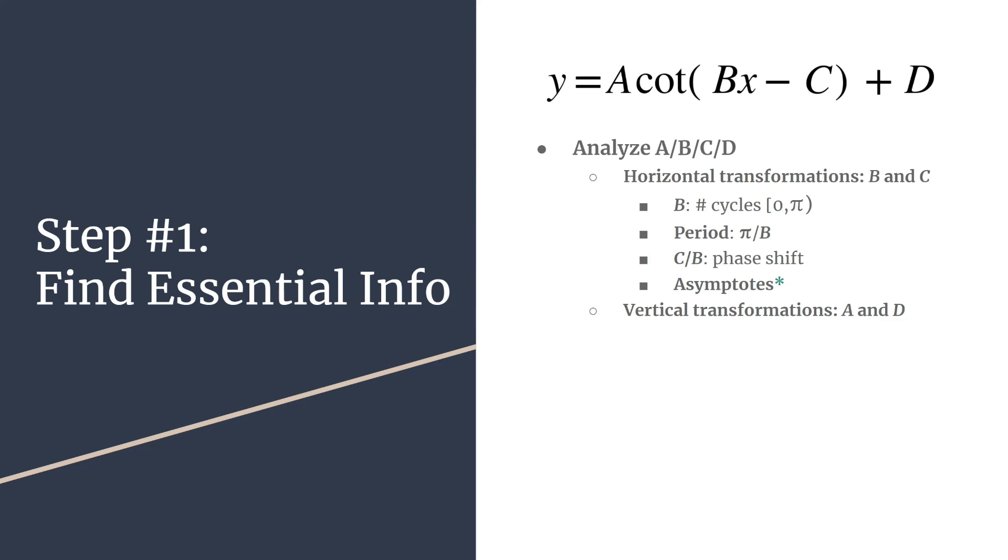So then A and D, those are our vertical transformations. A is going to be our factor for our vertical stretch or compression. So I like to think of those as our curve setting points. How stretched out are those? And we'll see those in the base pattern in the next step. D is going to be your vertical shift, so how many units up or down. And then once you do all that, you can decide on how to label your axes. So I call those your scale labels.